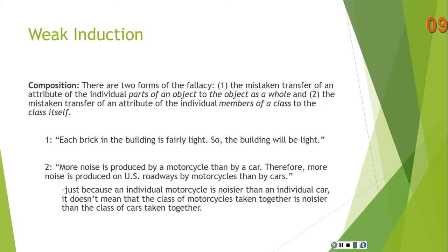Here's an example: 'Each brick in the building is fairly light, so the building will be light.' Of course not — just because each brick weighs, say, six ounces, it doesn't mean the entire building weighs six ounces. When you add them all together, it's quite heavy. That's an example of transferring an attribute of the individual parts of an object to the object as a whole.